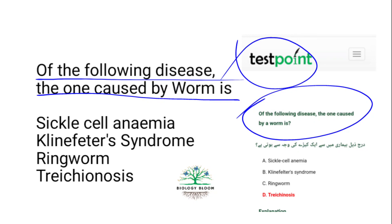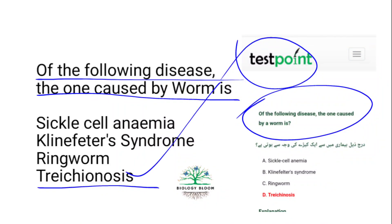Which disease is caused by a worm? Sickle cell anemia is a sex-linked disorder, Klinefelter syndrome is sex-linked, ringworm is a fungus. Trichinosis is a disease caused by a worm — it is a parasitic infection caused by the roundworm Trichinella, acquired by eating undercooked or raw meat, especially pork or wild game.